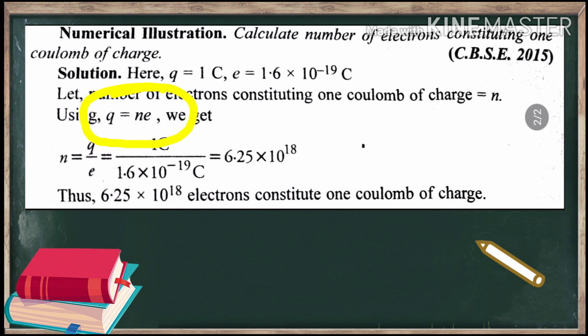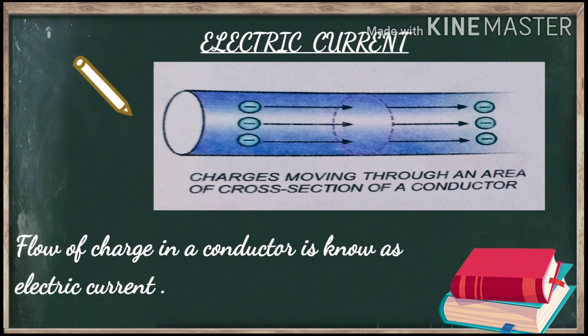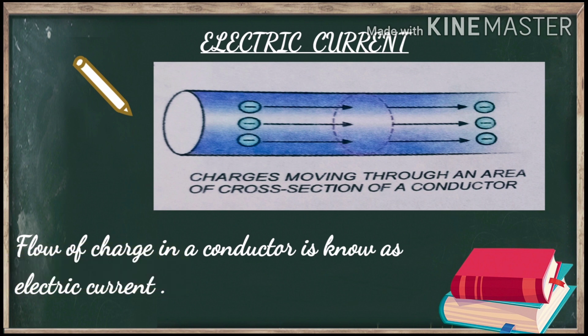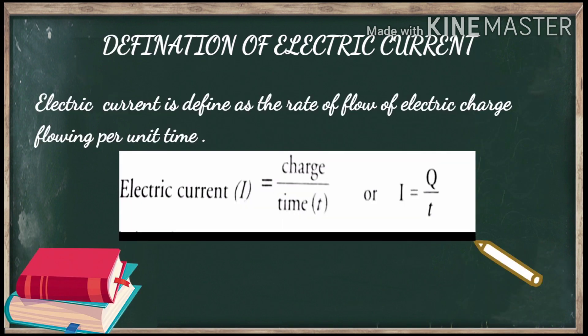Now coming to electric current. Electric current is similar to water current. Just as water current is due to the flow of water in rivers, similarly electric current is the flow of charge in a conductor. The definition of electric current is: the rate of flow of electric charge per unit time. We can see in the picture that charges are flowing in the conductor.